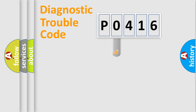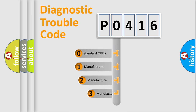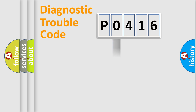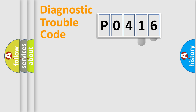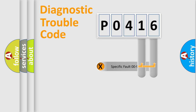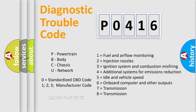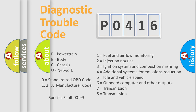This distribution is defined in the first character of the code. If the second character is expressed as zero, it is a standardized error. In the case of numbers 1, 2, or 3, it is a more specific car-specific error. The third character specifies a subset of errors. This distribution is valid only for the standardized DTC code, and only the last two characters define the specific fault of the group. Such a division is valid only if the second character code is expressed by the number zero.